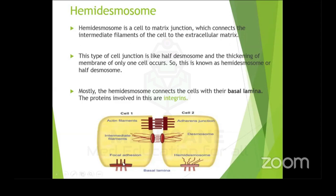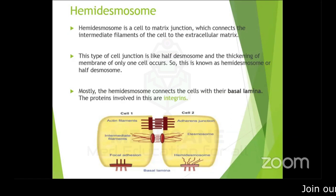Hemidesmosomes are similar to focal adhesions — the proteins making them up are integrins — but the connection is formed by intermediate filaments rather than actin filaments. They are called hemidesmosomes because one half is within the cell and the other half is in the extracellular space — literally a 'half desmosome.'